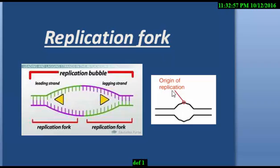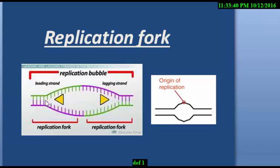Here you see the origin of replication — that is another definition. What is the origin of replication? It is from where the replication happens, from where the replication starts, or from where the replication originates. That is called the origin of replication. In the middle of the replication bubble, the replication starts from here — that is called the origin of replication. The DNA strand is separated by the helicase enzyme, the DNA strands make bubbles, and the strands are separated. That is the origin of the replication fork, where the replication starts.